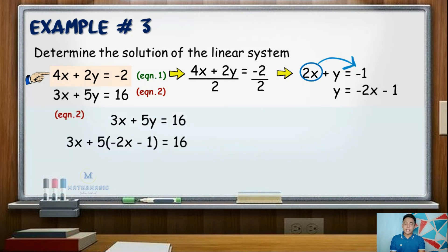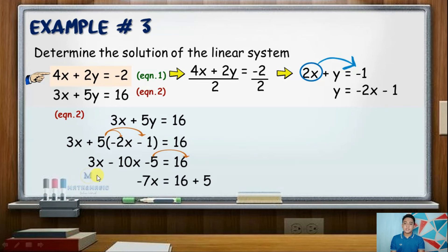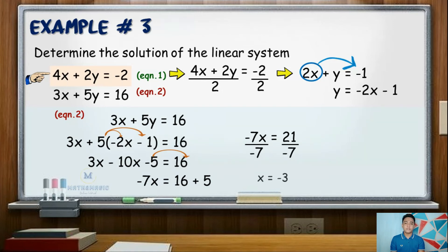Substituting gives 3x plus 5 times the quantity (negative 2x minus 1) equals 16. Distribute 5: 5 times negative 2x is negative 10x, and 5 times negative 1 is negative 5. The equation becomes 3x minus 10x minus 5 equals 16. Combine like terms: 3x minus 10x is negative 7x. Transpose negative 5 to the right side, giving positive 5, then add 16 for a sum of 21. Divide both sides by negative 7: x equals 21 divided by negative 7, which is negative 3.